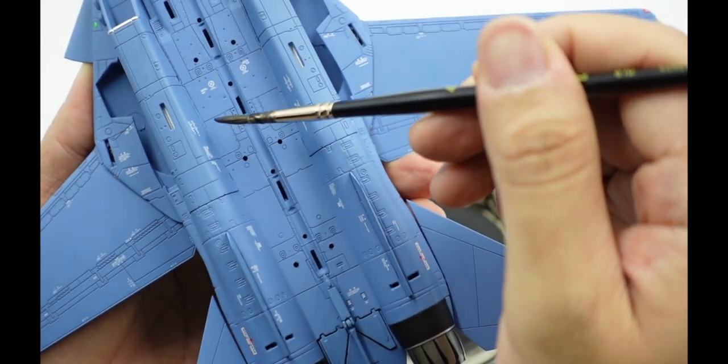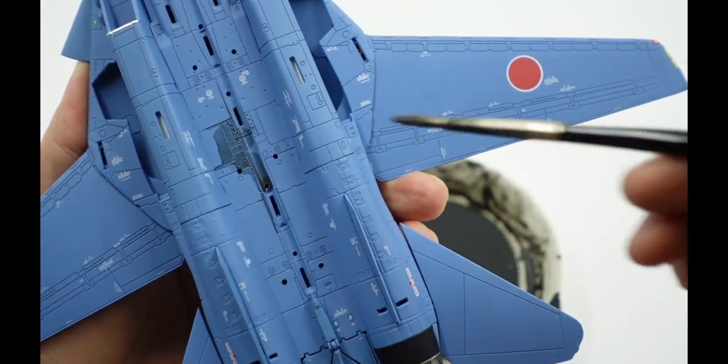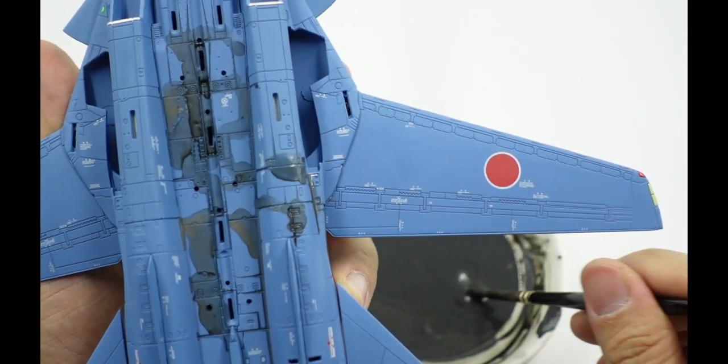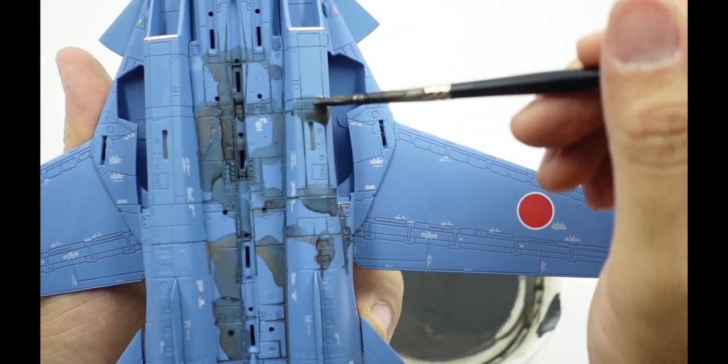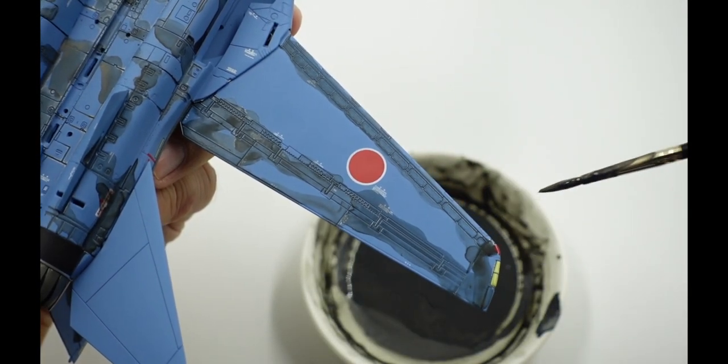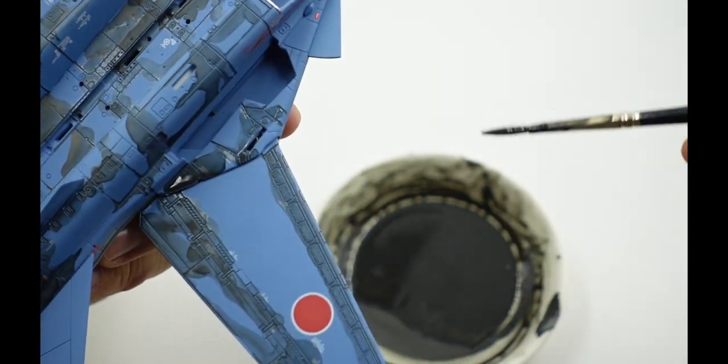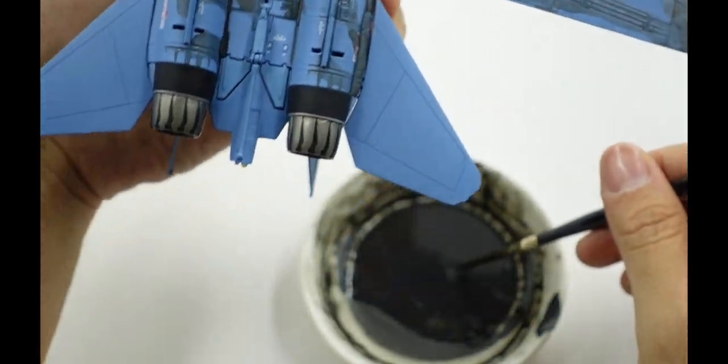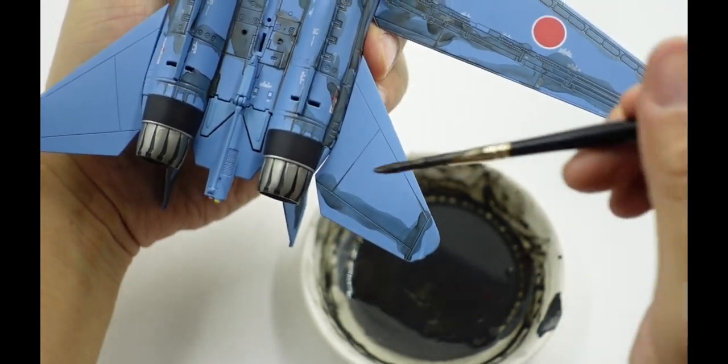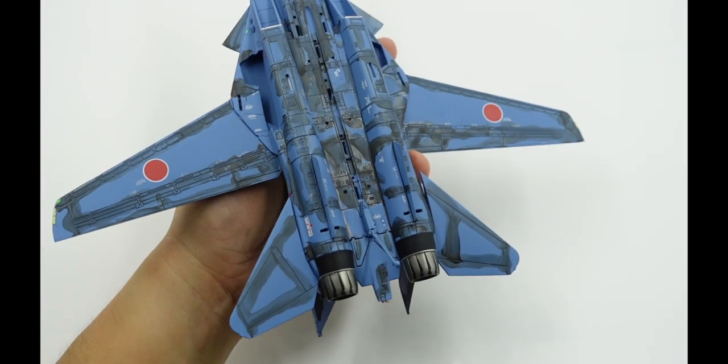We apply the mixture with the applicator onto the model, focusing on panel lines and recessed areas on the aircraft model. The good thing about working with oil paints is that it does not dry quickly. It allows you time to manipulate and achieve the desired effect that you want.